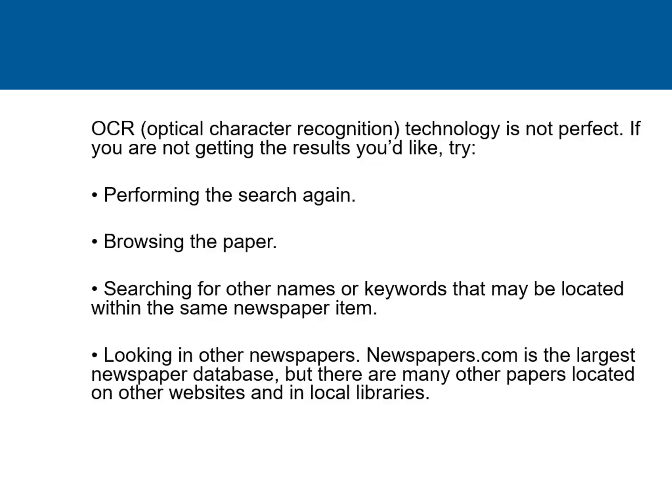The OCR, or optical character recognition technology, that Newspapers.com uses is not perfect. If you are not getting the results you'd like, try performing the search again — sometimes the algorithm changes a little each time you search. Try browsing the paper directly if the print is too dark or smudged, as the characters may not be recognized. Try searching for other words that may be included in the newspaper item you are looking for. For example, if you are looking for an obituary for a female under her married name, also try her maiden name, as that was typically included as well. Also, try looking in other newspapers. Newspapers.com is the largest searchable newspaper database, but there are other papers that can be found on other websites and in local libraries.